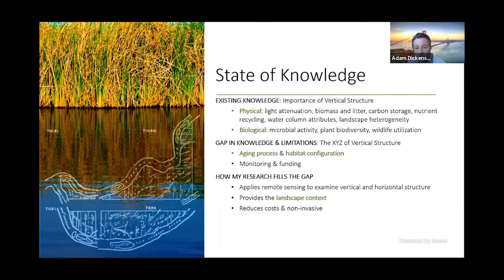So we already know that the vertical structure of vegetation in wetlands is very important. We know it impacts light attenuation, microbial activity, carbon storage, nutrient cycling, plant biodiversity, landscape heterogeneity, and wildlife utilization. What we don't know is what is contributing to the makeup of that vertical structure. We don't know how the vertical structure is configured horizontally and we don't know the aging process of the vertical structure in wetlands. Understanding the maturation process is one of the most limiting factors in wetland restoration.